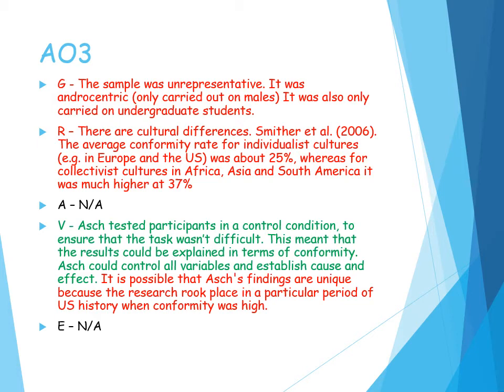Is it reliable? It doesn't seem to be consistent across cultures because there are cultural differences. Smithers et al. found that average conformity rates in individualistic cultures was about 25% — in America — whereas in collectivist cultures it was much higher, around 37%. So it is guilty of being culturally biased and therefore beta biased to apply findings from the American study to all other cultures. Is it valid? It was conducted in controlled lab conditions, so all extraneous variables were controlled for, reducing the likelihood of confounding variables and allowing us to establish cause and effect, increasing internal validity.